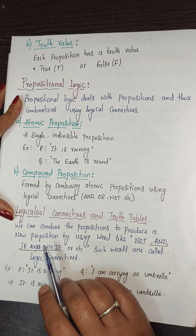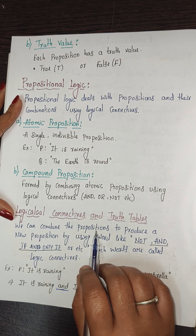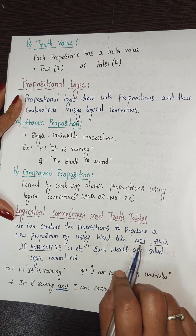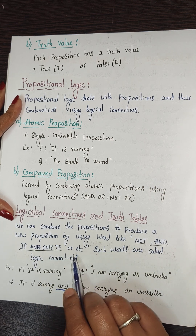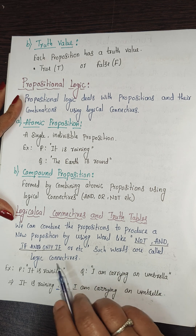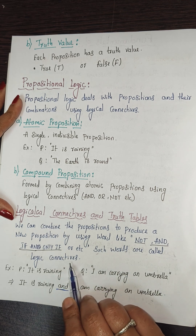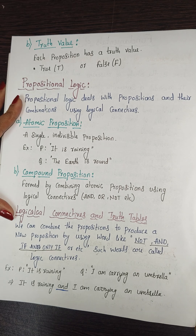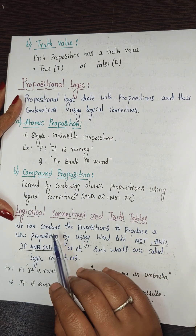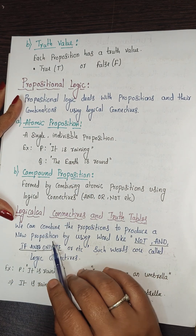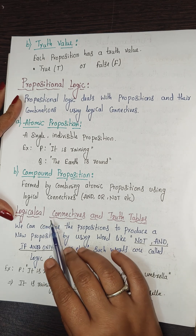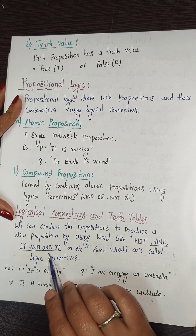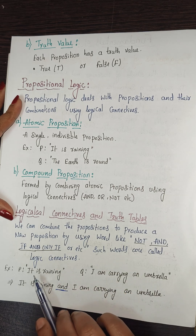Logical connectives are used to combine propositions to produce a new proposition using words like NOT, AND, IF, IF AND ONLY IF, OR, etc. Such words are called logical connectives.